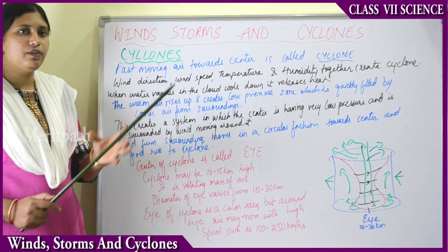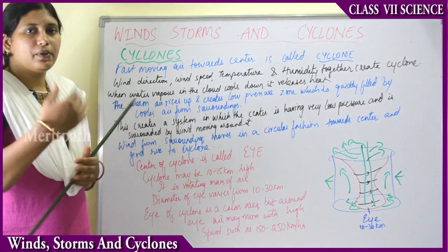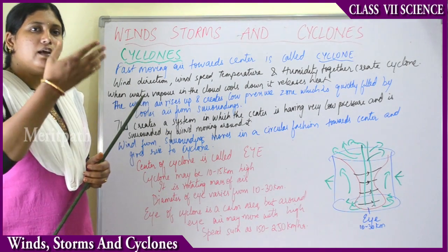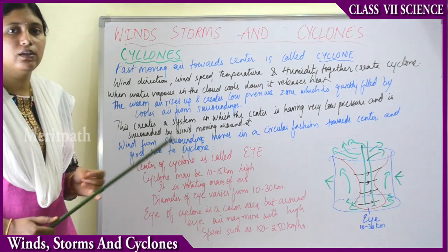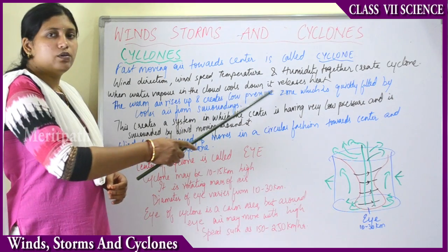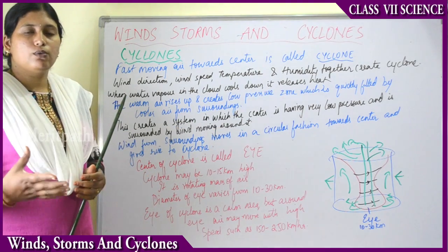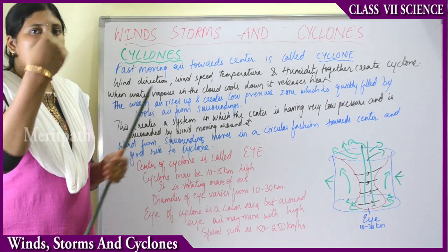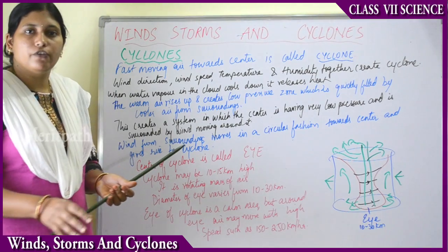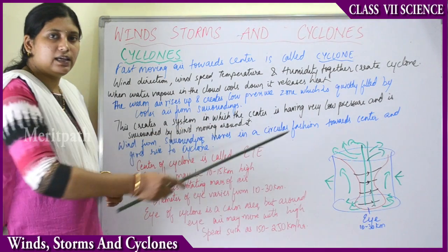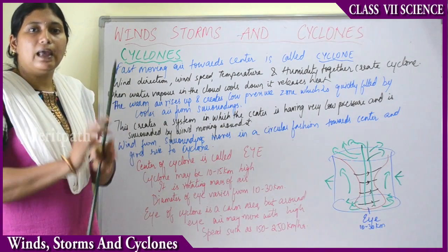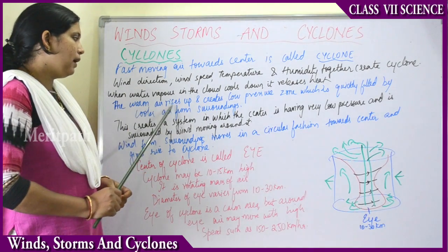Water evaporates and goes up into the sky as water vapor. Up in the atmosphere it cools down and comes back to earth as rain. When water vapor in the cloud cools down, it releases heat. The water rising as vapor carries some heat, and when it comes down as rain it releases that heat into the atmosphere, warming the surrounding air, which then rises up.